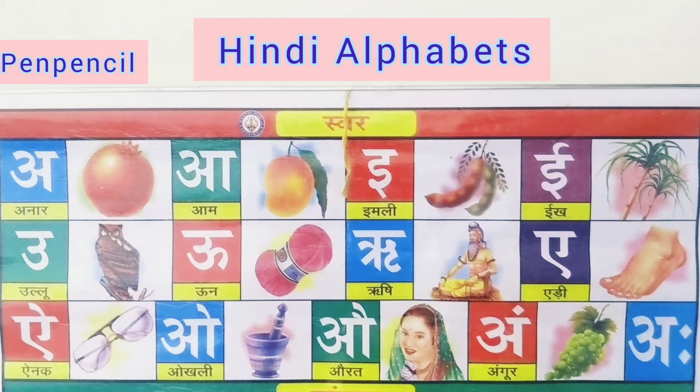First we will sing a song — the Swar song — and then we will read each letter one by one. Okay kids, let us start.